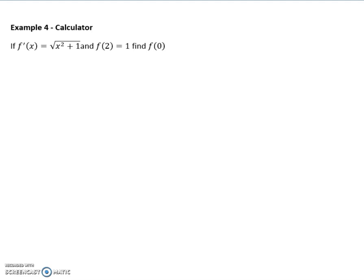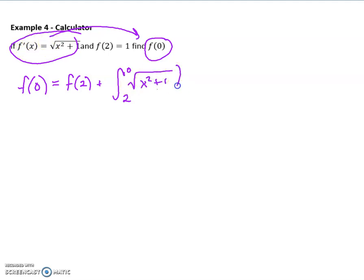And in our last example, this would just be a calculator example. So again, if this is the derivative, and I want to find a value on f, that means I'm going to have to work myself backwards. So if I want to find f of 0, I need, start with what I know, initial value, plus the integral from the value I know to the value I want of my derivative, which I have here, so of root x squared plus 1 dx.